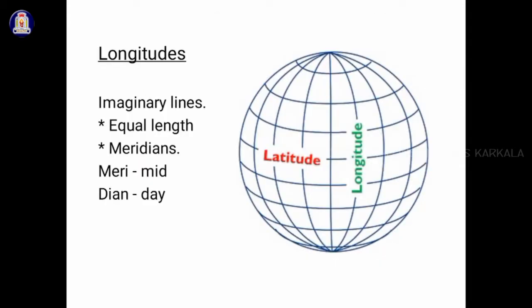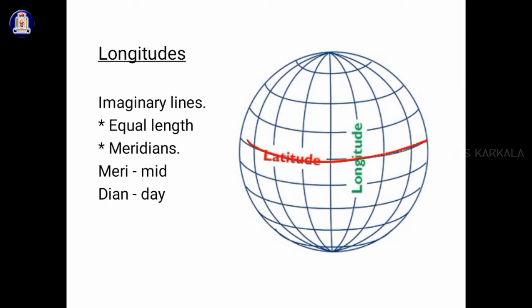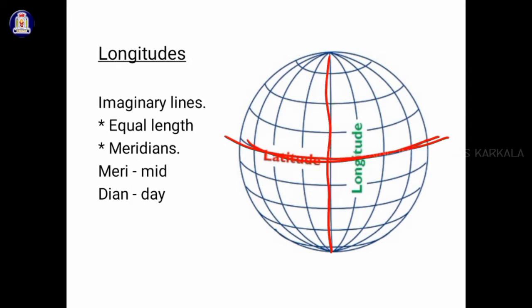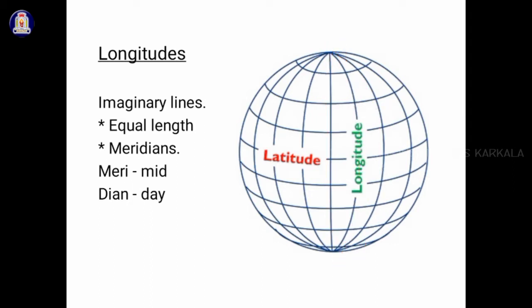Now let's see what longitudes are. Can you see these vertical lines? These are called longitudes. These are also imaginary lines — you do not see them on the earth but you find them on the globe. We use them to know the directions and location of different places on the earth. These imaginary lines intersect the equator at right angles, joining north to south.